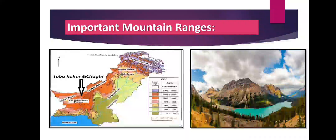Many mountain ranges are situated in Balochistan Plateau: Makran, Siahan, Ras Koh, Chagai, Pub, and Toba Kakar mountains. The Toba Kakar and Chagai mountain ranges are situated in the western part of Balochistan. There are salt lakes in this plateau, and the famous one is Hamoun-e-Mashkhel — it is the largest seasonal lake in Pakistan, located in Balochistan. It is approximately 85 kilometers long and 35 kilometers wide.